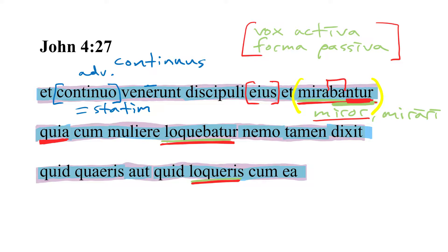Quia, introducing an object clause here as we've seen so many times. That he, we have to supply here, and this is Jesus is the subject from the context we can tell. Loquebatur, and this is another deponent verb, loquor loqui, which is more or less the equivalent of dico dicere, to speak, to say something.